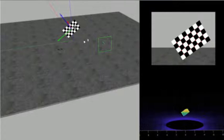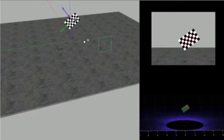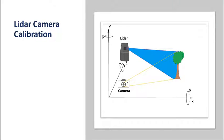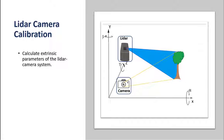In this video, I will demonstrate LiDAR camera calibration process using a checkerboard calibration pattern. LiDAR camera calibration involves calculation of extrinsic parameters of LiDAR camera system in the form of a rigid transformation matrix. Extrinsic parameters define the location and orientation of the sensors with respect to the world frame and with each other.